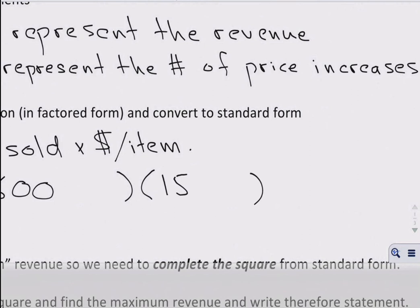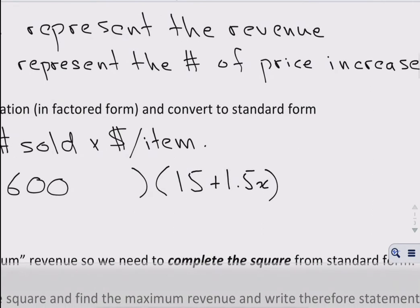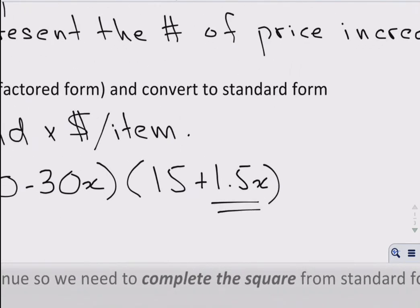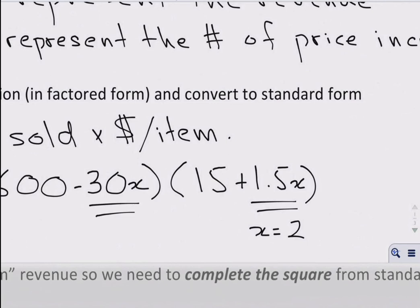$15, and again I'll leave this here. So what happens? Well, if we increase the price by 1.5x, x being the number of times we increase it by $1.50, the number of caps we sell decreases by 30 times x. Again, x is the number of times we increase the price by $1.50. So for example, if I increase the price by $3, that means x would be 2, and in this case 30 times 2 would be 60, so I'd subtract 60 from 600.